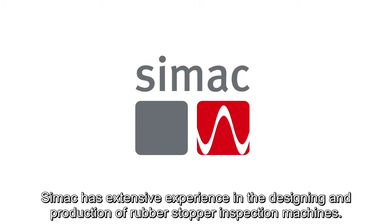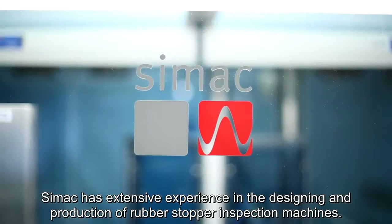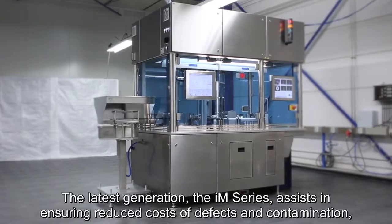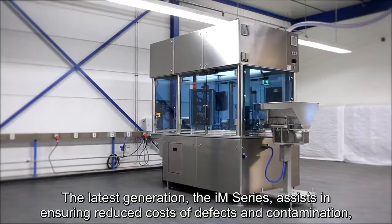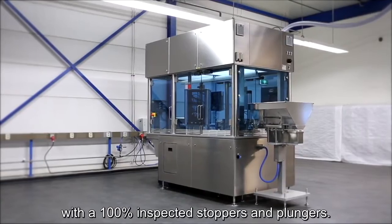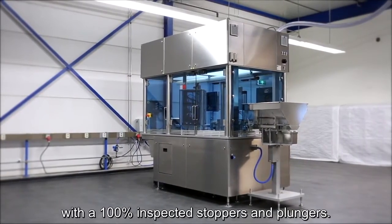CIMEC has extensive experience in the designing and production of rubber stopper inspection machines. The latest generation, the IM series, assists in ensuring reduced costs of defects and contamination with 100% inspected stoppers and plungers.